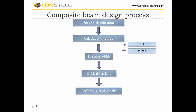Now some basics about the theory of designing composite beams. The main steps of the design process are: first, section classification, which is very similar to steel cross-section classification and determines whether the calculation method is elastic or plastic. Next, we define the effective width of the concrete flange, then define critical sections, and for these critical sections perform the related checks.